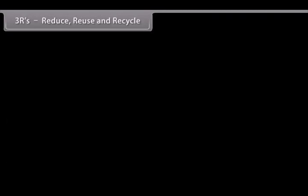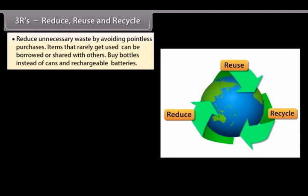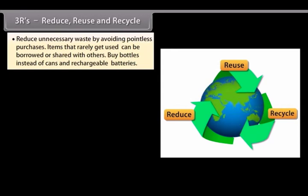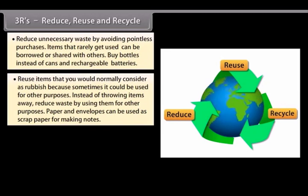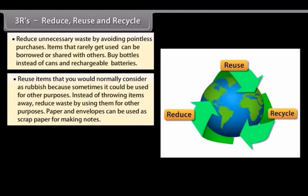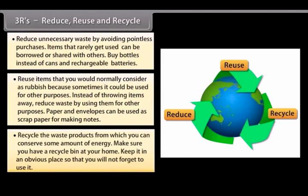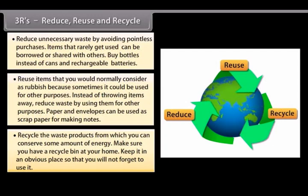The three R's — reduce, reuse, and recycle: Reduce unnecessary waste by avoiding pointless purchases; items that are rarely used can be borrowed or shared with others. Buy bottles instead of cans and use rechargeable batteries. Reuse items that you would normally consider as rubbish, since they could sometimes be used for other purposes. Paper and envelopes can be used as scrap paper for making notes. Recycle waste products to conserve energy, and make sure you have a recycle bin at home in an obvious place so you will not forget to use it.